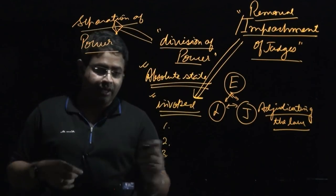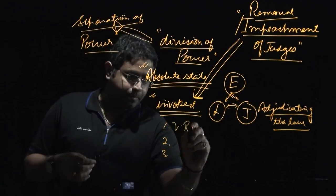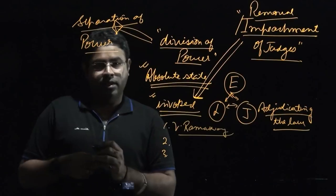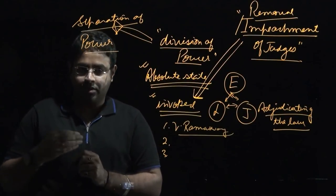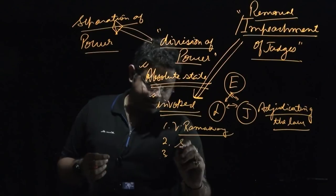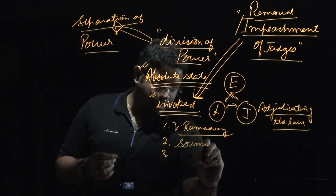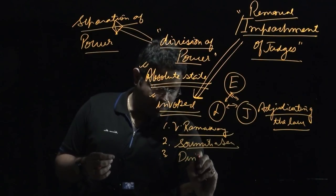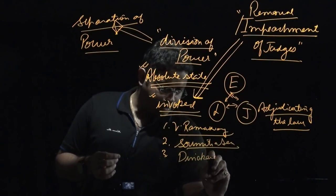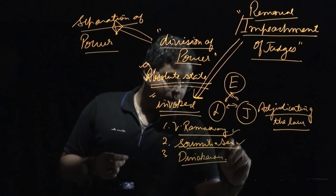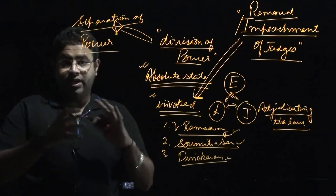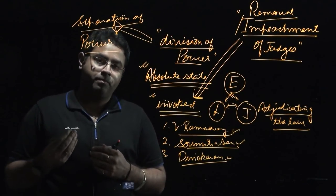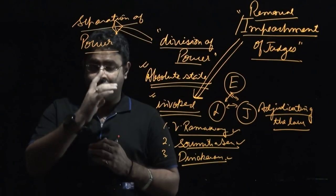Since India got its independence and after the promulgation of the Constitution of India, we had very few instances when this impeachment process has been invoked. The first case relates to V. Ramaswami, judge of the Supreme Court. The other cases relate to Sumitra Sen and Justice Dinakaran. These are the three judges against whom the impeachment process had started, but till date no judge has ever been impeached in India.